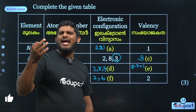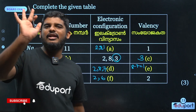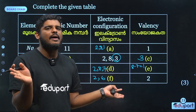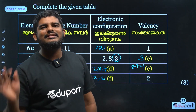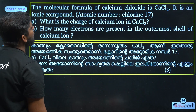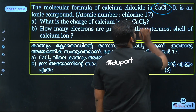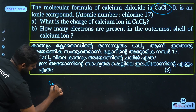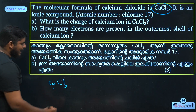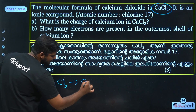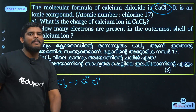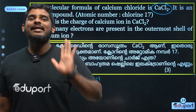This is a 3-mark question — easy to score. In the first and second chapters, you have to score. If electrons in outermost shell are less than or equal to 4, valency equals that number. If greater than 4, valency is 8 minus that number. Next question: the molecular formula of calcium chloride is CaCl2. What is the charge of the calcium ion?